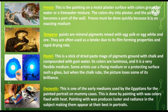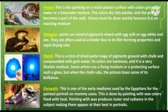We have also tempera. Paints are mineral pigments mixed with egg yolk or egg white, often used as a binder due to its film-forming properties and rapid drying rate. We have also pastel. This is a stick of dried paste made of pigments ground with chalk and compounded with gum water. Its colors are luminous and it is a very flexible medium. Be careful in doing pastel artworks because they are very sensitive and the colors can easily be removed.